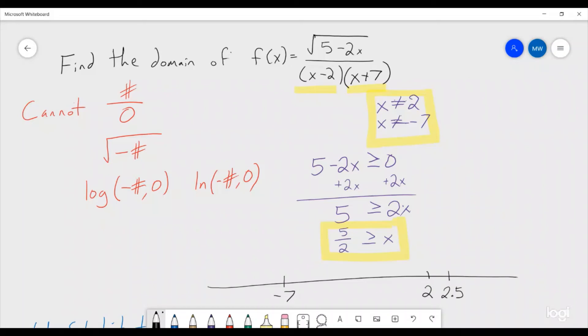So we know that we can't have it be 2, so we have a hole there. It can't be at negative 7, so we have a hole there, and it has to be less than or equal to 5 halves. So we can include 5 halves, and x has to be everything on this side. We can't include those holes, we're going to just skip those, and so that's going to be our domain.